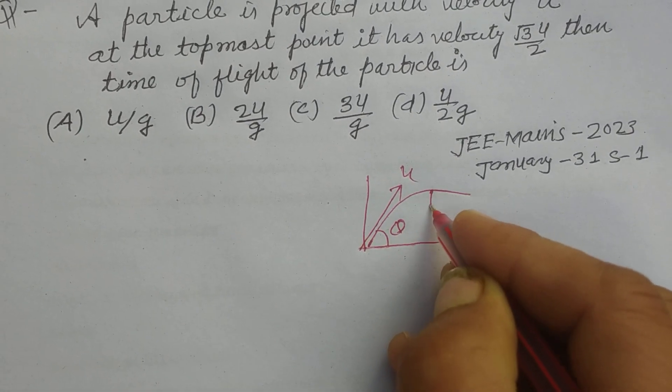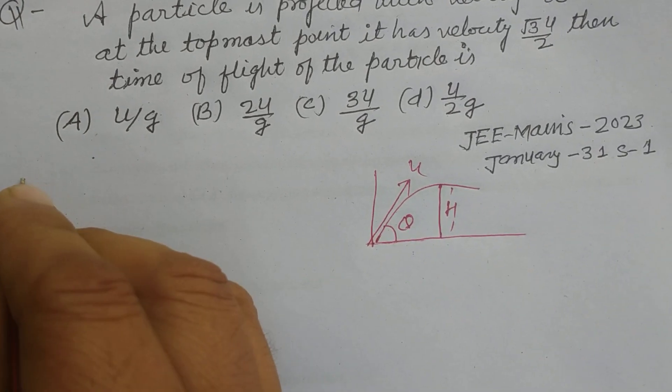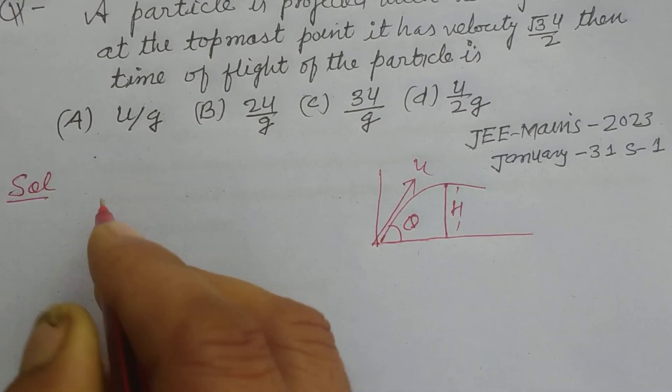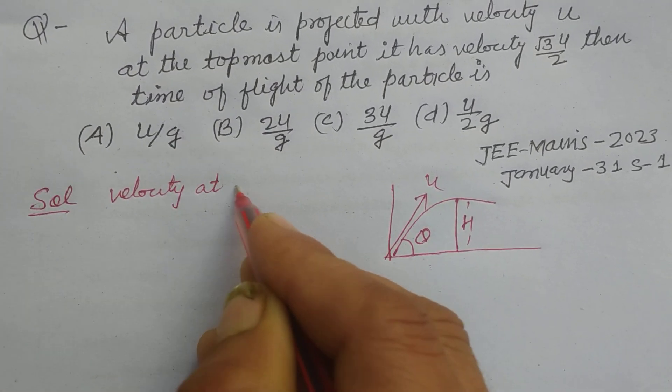So, the velocity at the topmost point or highest point, velocity at maximum height.